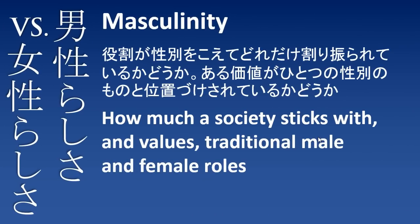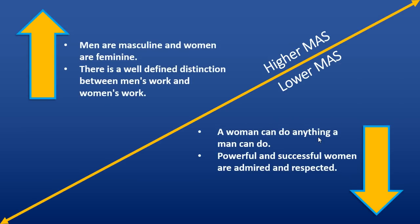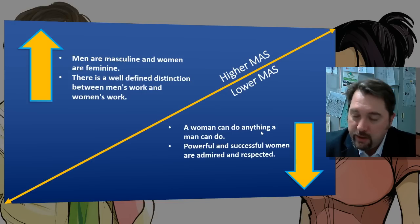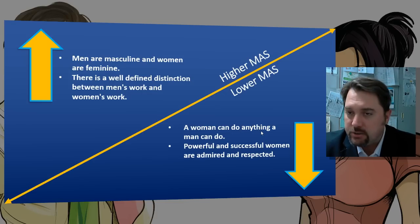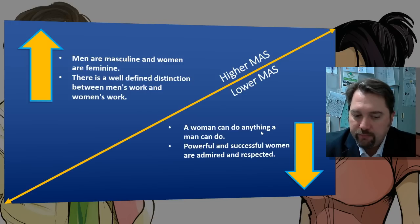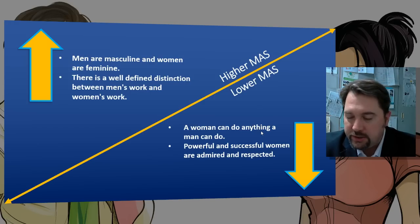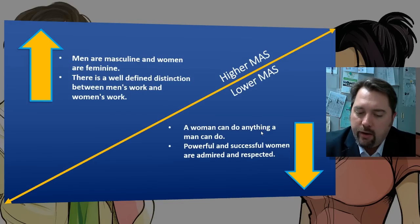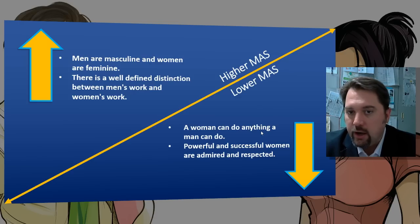Next is masculinity — the degree to which a society places high emphasis on traditional male and female roles. A higher masculinity score means men are masculine and women are feminine in the traditional sense, with well-established distinctions between male and female roles in society and little deviation from them. A lower score reflects a more equal playing field, with women in more positions of leadership and power.